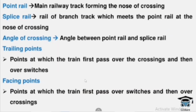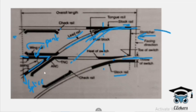The angle of crossing is the angle between the point rail and splice rail. This is the angle at the nose of crossing — this is the angle of crossing.